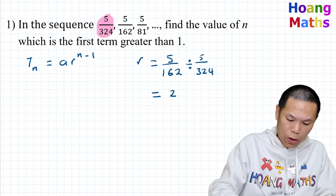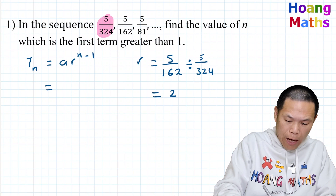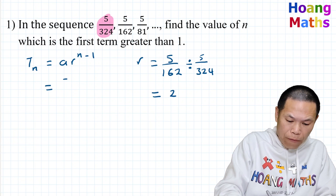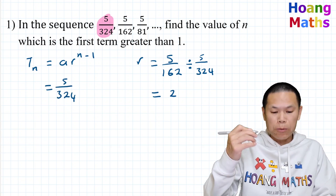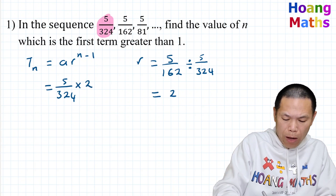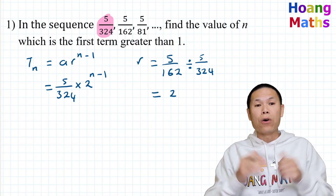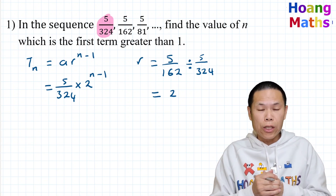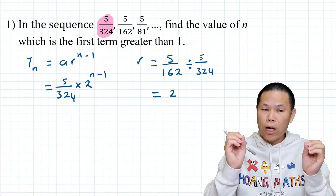So r is 2, and therefore t(n) = (5/324) × 2^(n−1). That is the general rule for this sequence, but we want the first term that is greater than one.